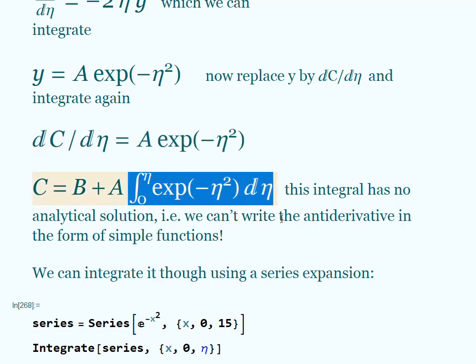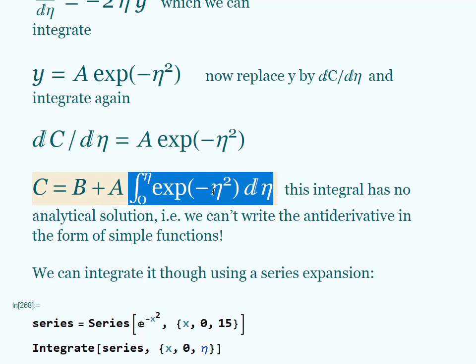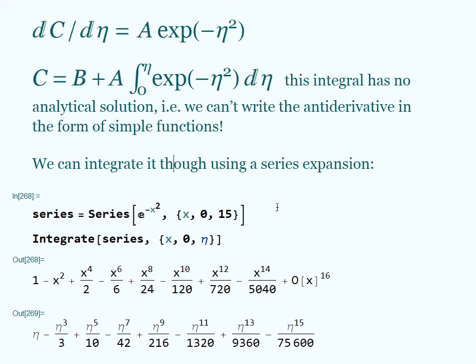Now we have a problem, a small one. This integral here has no antiderivative form. It has no solution in the form of simple functions. So I can take this integral and find the numeric value at any value of eta that I want, but I can't do anything else with it. What we would like to do though is maybe substitute something in here. I don't want to have to take this integral every time I want to plot my solution, because the integral of this is a little messy.